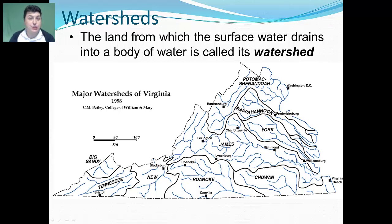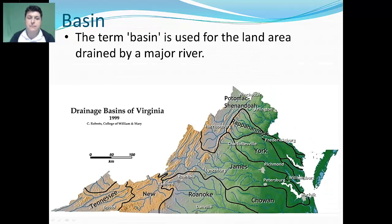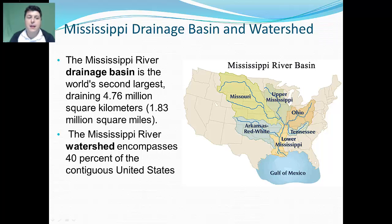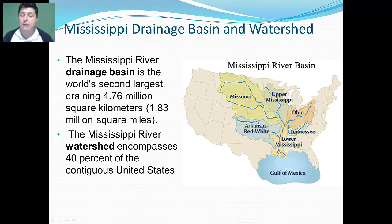The land from which surface water drains into a body of water is called its watershed. The land area drained by major rivers in these watersheds is called a basin. The Mississippi River drainage basin is the world's second largest, draining 4.7 million square kilometers of land, and the Mississippi River watershed encompasses 40% of the contiguous United States.